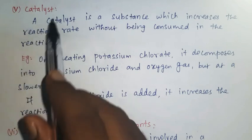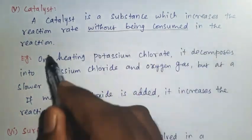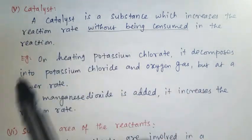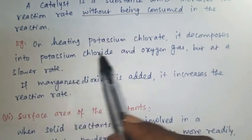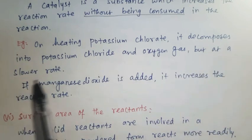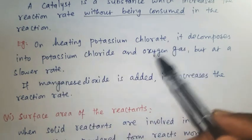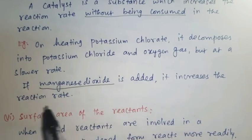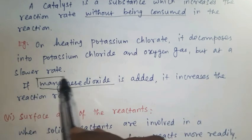Fifth factor: catalyst. A catalyst is a substance which increases the reaction rate without being consumed in the reaction. On heating potassium chlorate, it decomposes into potassium chloride and oxygen gas, but at a slower rate.